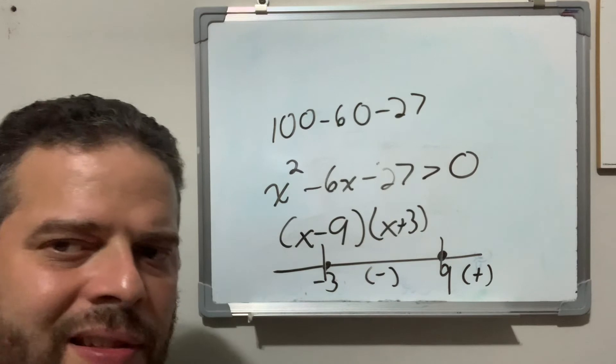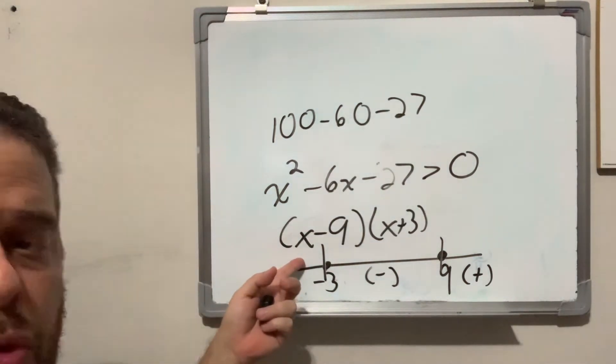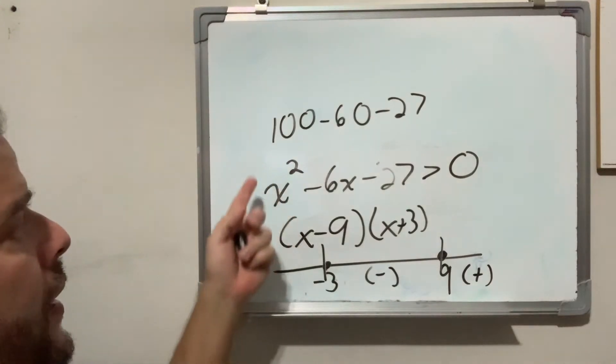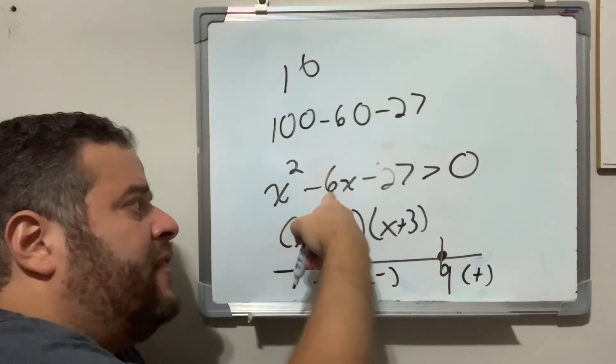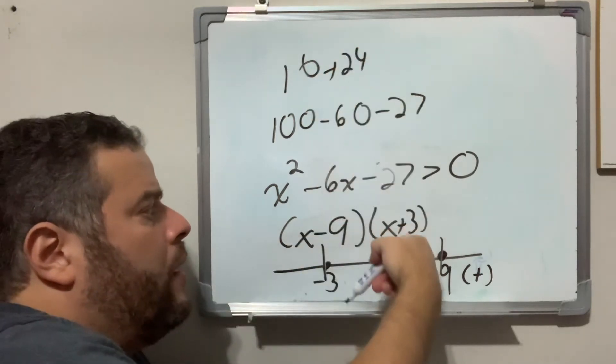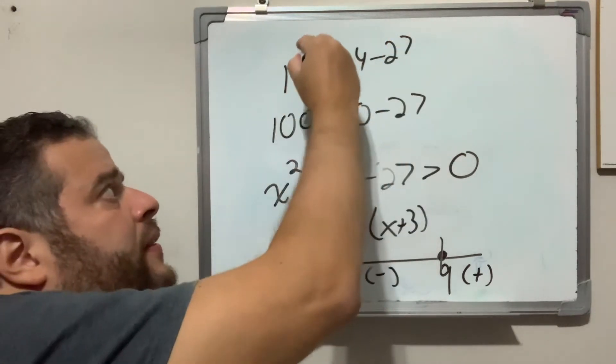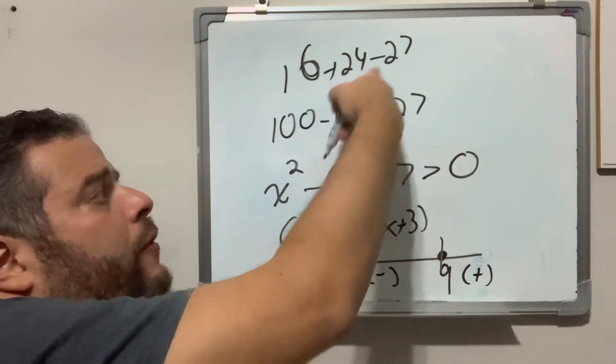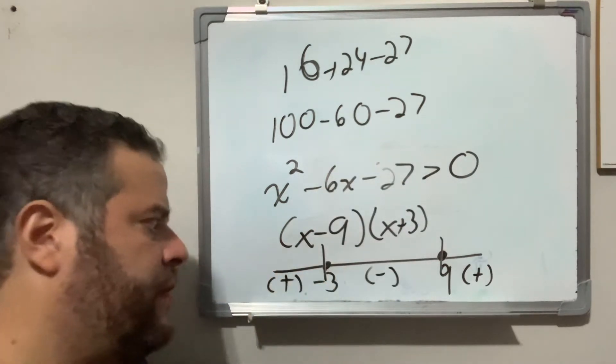Again, you don't care about the number, just the sign, positive. And now, let's look on my left-hand side, let's use negative 4. Negative 4 squared is 16. Negative 6 times negative 4 is positive 24, minus 27, and this is a 16. I add this, it's 40 minus 27, positive 13, a positive number.